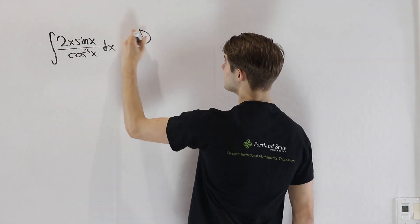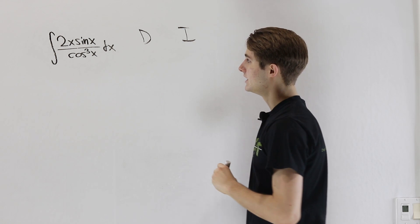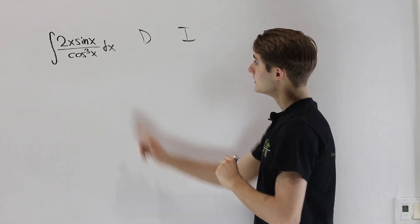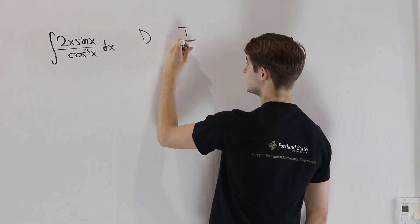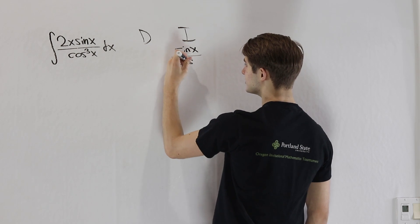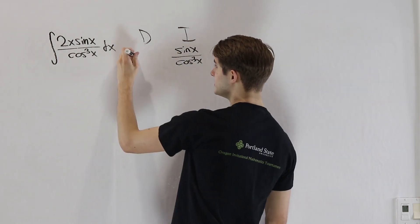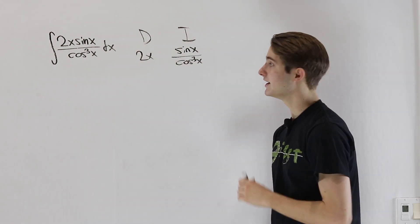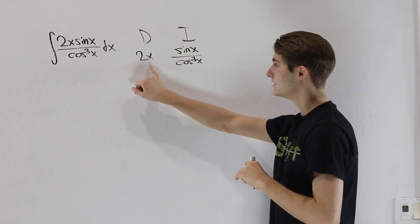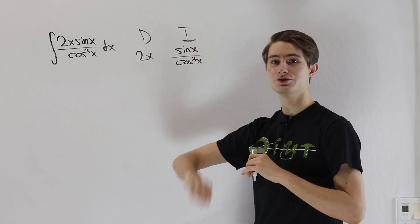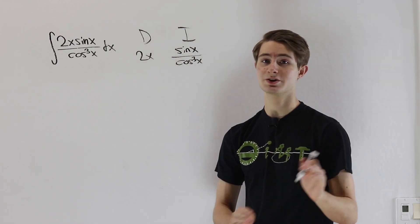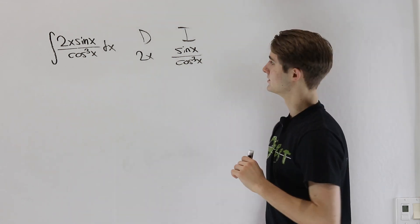So let's see how that would work out. If we find something to differentiate and something to integrate, we know that we can integrate sine of x over cosine cubed of x. And on the other hand, we can definitely differentiate 2x. In fact, differentiating that is going to help us out because we know the derivative of x is just going to give us 1, so that just becomes a constant and it's very easy to deal with.